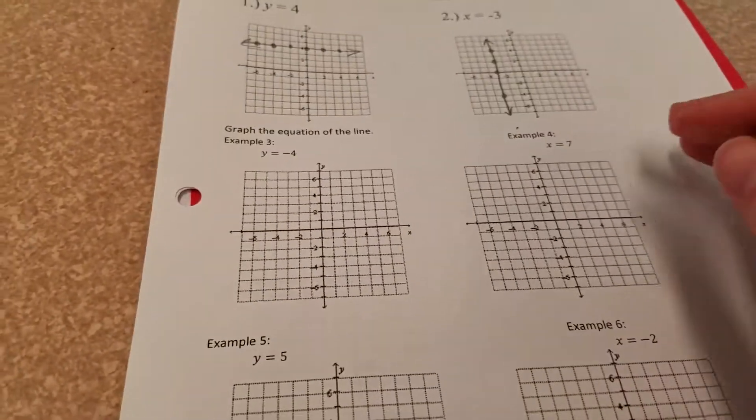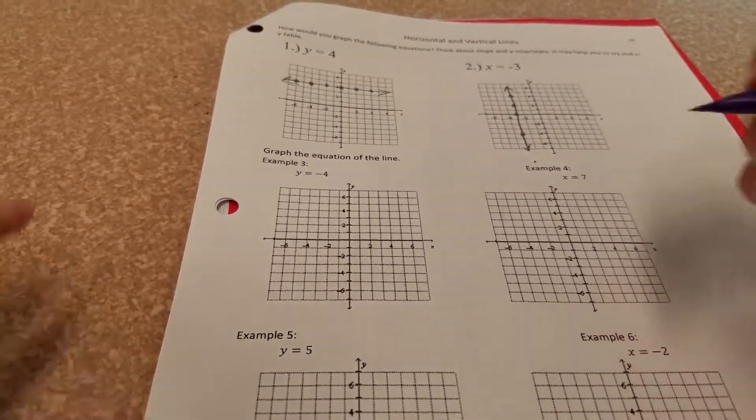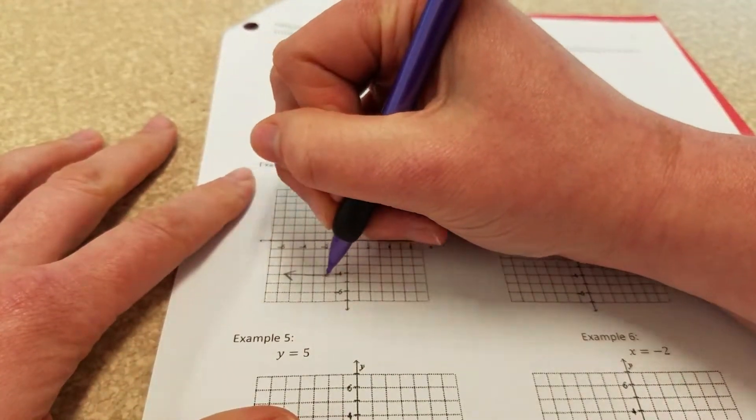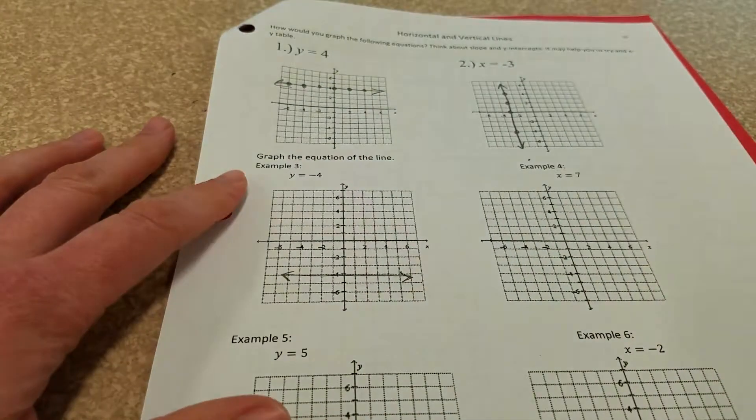Looking at this, I have a pattern. When I have y equals, I get a horizontal line through that number on the y-axis.